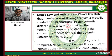Ohm's law states that the steady current flowing through a metallic conductor is proportional to the potential difference between its ends, provided the temperature remains constant. If I is the current in amperes and V is the potential difference in volts, then I is proportional to V at constant temperature.